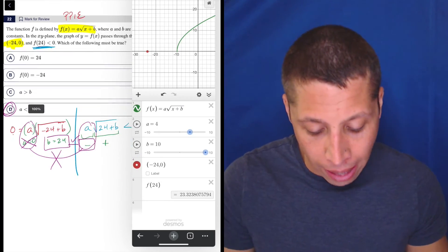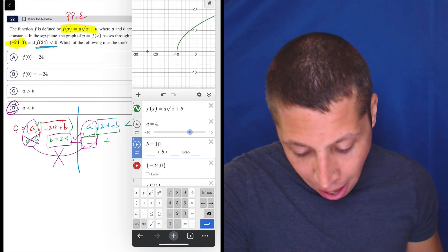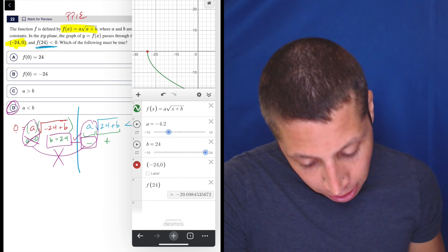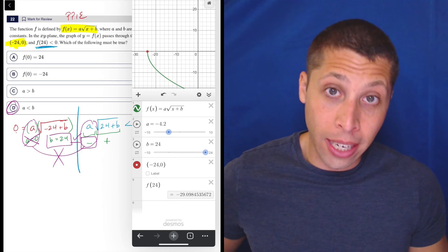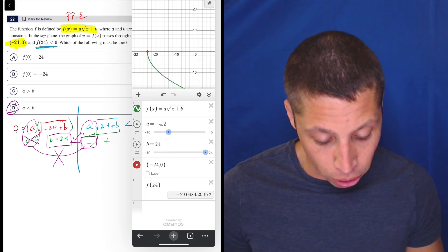Now, let's go to Desmos and see if we can prove it and see it more clearly. So, what I've come to believe is that B has to be 24, and A has to be negative. Now, if that's the case, look, it looks like it hits that point, that red point that I've got there at negative 24 is 0. So, that's good.